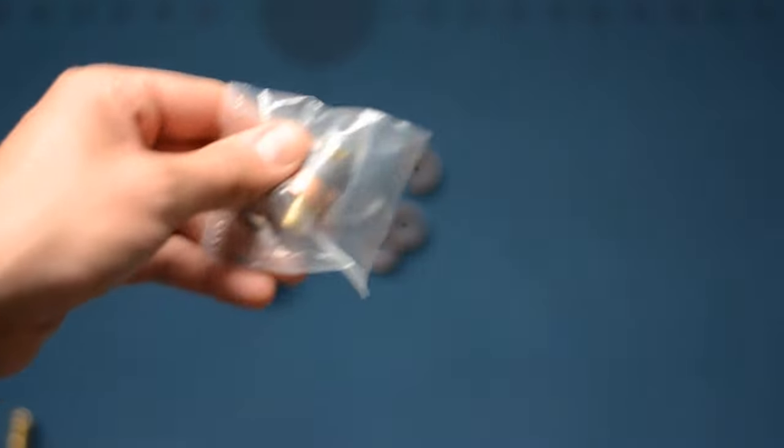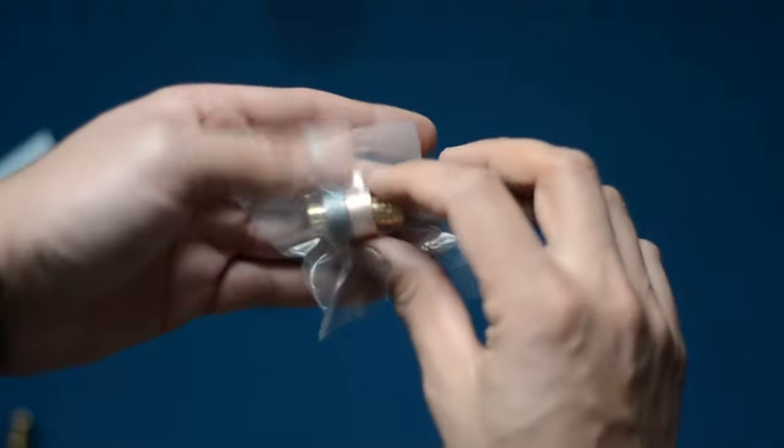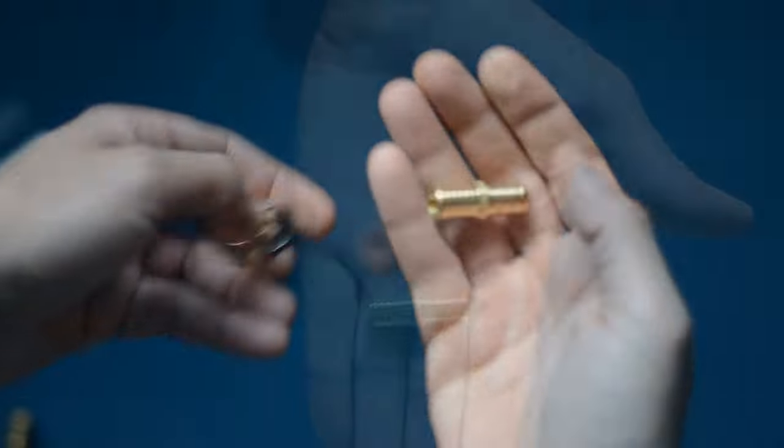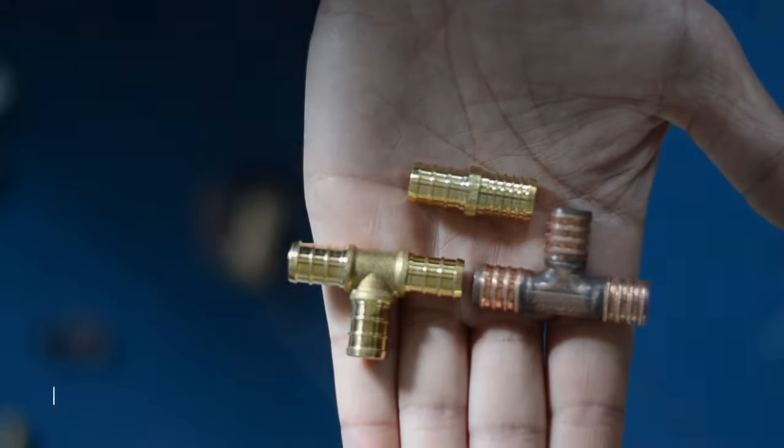Instead use this special transition coupling. Diameter and ridges on one side of this coupling matches with poly B. And other side matches with pex.